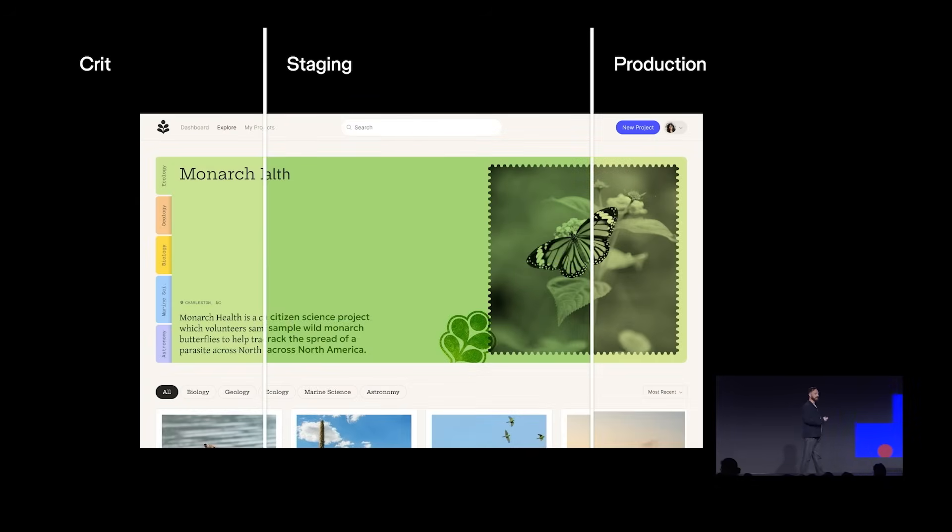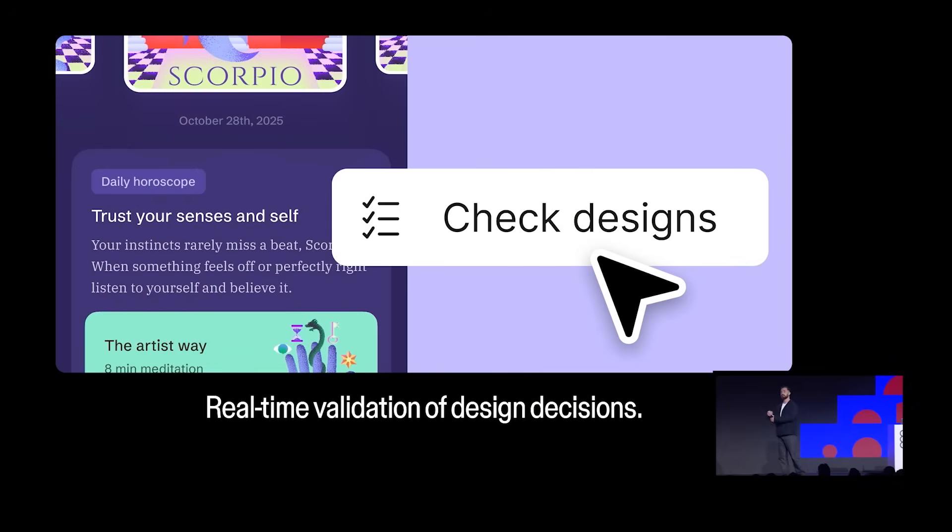We've all had times when designs made it through crit and into production with the wrong colors, misused patterns, or hard-coded components. We just didn't have the time or the tools to catch it yet. Now imagine those reviews happening automatically. Real-time validation of design decisions that are made in Figma every day. A world where adhering to design systems is as simple as autocomplete.